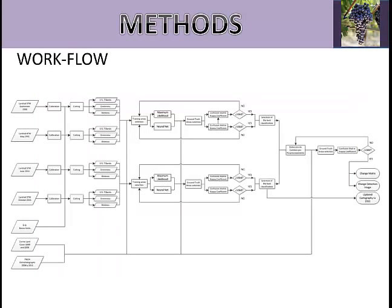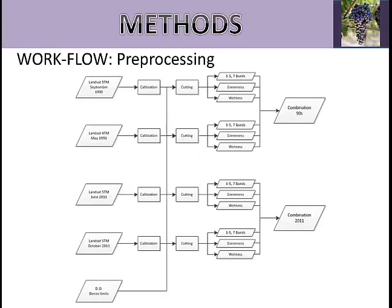Before getting results, we needed to prepare the images to start working properly. A calibration to reflectance top of atmosphere was applied to all images. No other radiometric corrections such as atmospheric correction were applied. The Tasseled Cap transformation was calculated to enhance the vegetation land covers. After that, a cropping of the images was produced to make processing easier. Finally, each pair of images was combined to form a single image, so at the end of this process we only have one image per year.